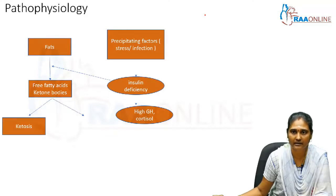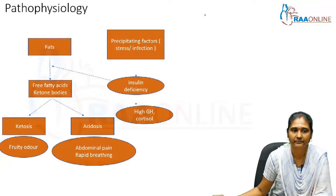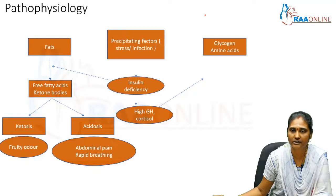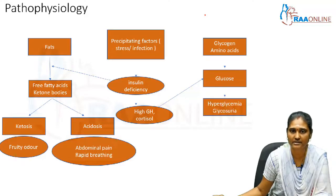Clinically, ketosis presents with a specific fruity odor, while acidosis presents with rapid breathing — specifically called Kussmaul breathing — and abdominal pain. Elevated growth hormone and cortisol drive glycogenolysis, releasing more glucose into circulation and causing hyperglycemia. When blood glucose exceeds the renal threshold, excess glucose spills into the urine, resulting in glycosuria.